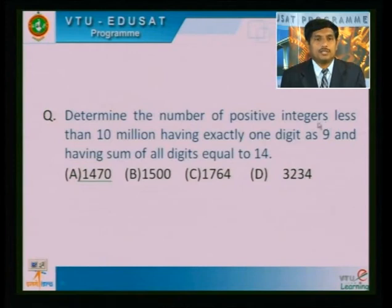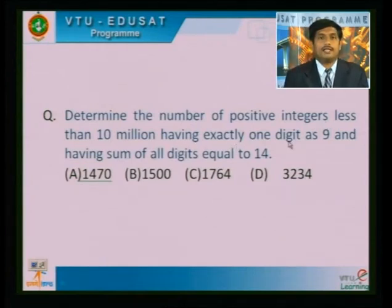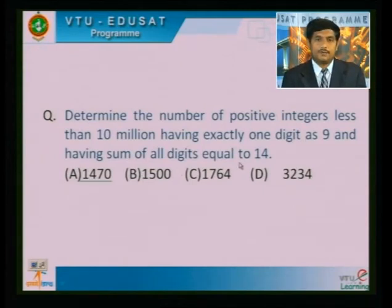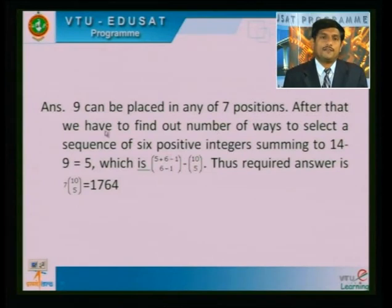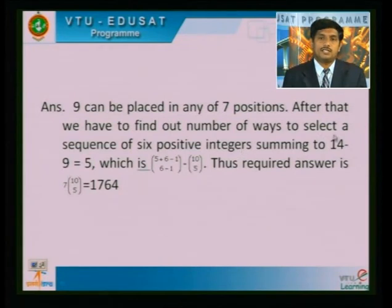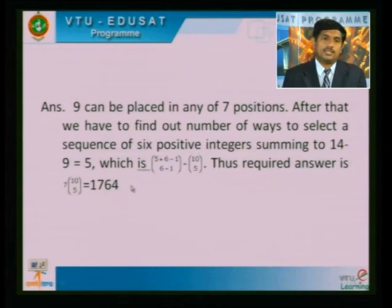Determine the number of positive integers less than ten million having exactly one digit as 9 and having the sum of all digits equal to 14. Here 9 can be placed in 7 positions; after that we need to find the number of ways to select sequences of six positive integers summing to 14 − 9 = 5. The required solution is 1764.